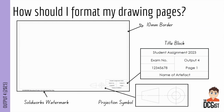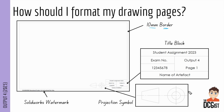For formatting your drawing pages, format them the same way you would a drawing sheet in DCG board drawing. You'll have a 10 millimeter border around the outside. Bear in mind the SOLIDWORKS watermark goes in the bottom left — it's smaller now so it fits under the 10 mm border and isn't too big an issue. You'll have a title block labelled with your student assignment year, your exam number, the output and page number, and the name of your artifact. Finally, include the projection symbol to show whether you're doing first or third angle — the vast majority will be doing first angle.